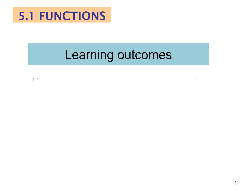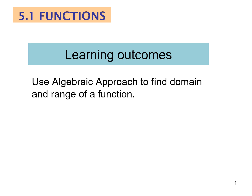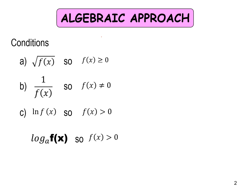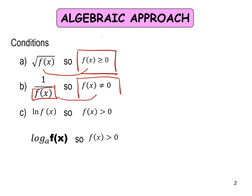5.1 Functions. Learning outcomes for today: use an algebraic approach to find the domain and range of a function. For the algebraic approach, these conditions must be considered. (a) For a square root function, f(x) must always be greater than or equal to zero. (b) For one over f(x), or any rational function, the denominator f(x) cannot equal zero. (c) For log f(x) or log base a of f(x), f(x) must be greater than zero.